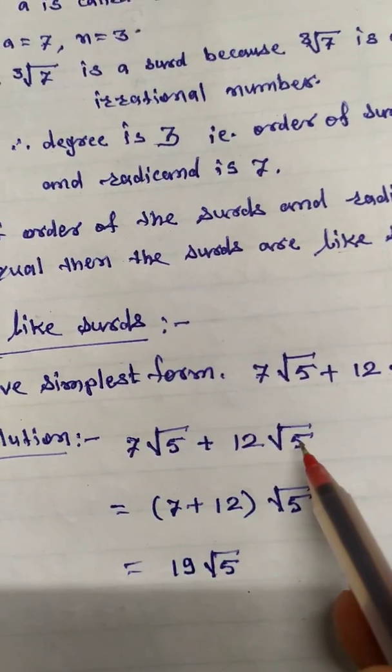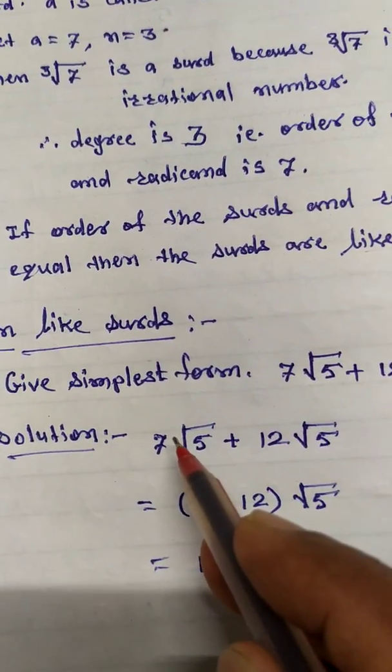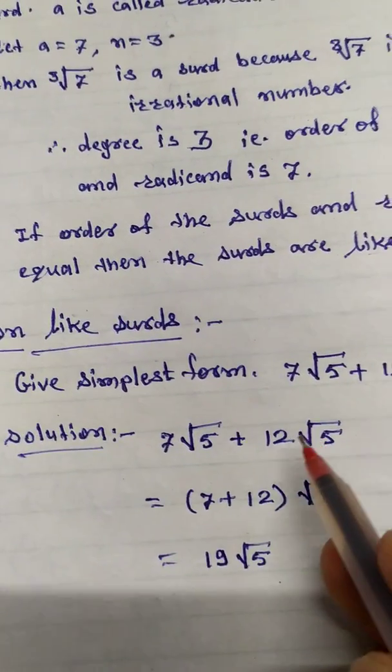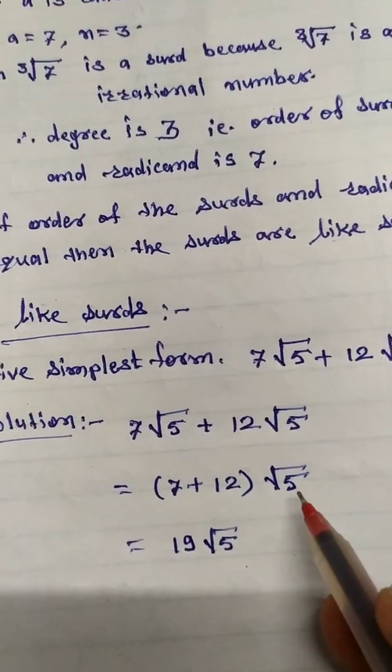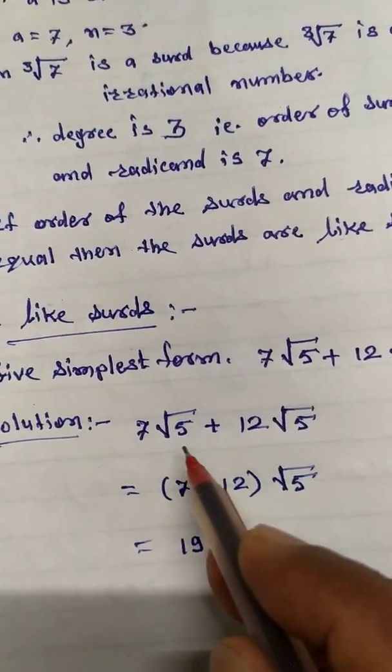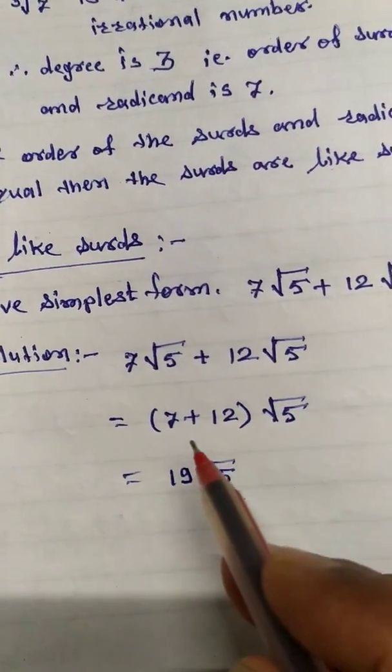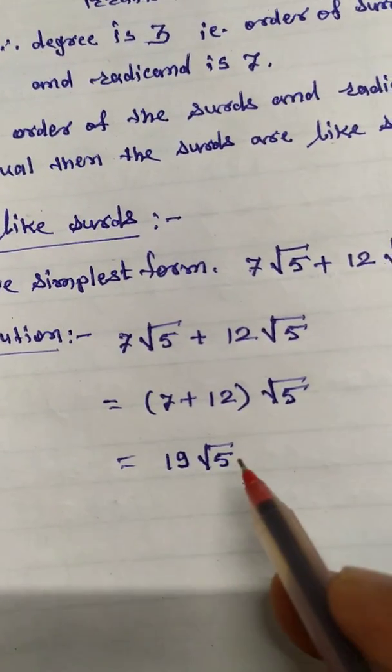So we call this like surd. Now order of this is 2, so I write root 5 common and 7 plus 12. Now 7 plus 12 is equal to 19, so answer is 19 root 5.